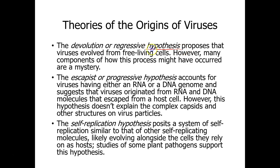There are three hypotheses on the origins of viruses. First is the devolution, or regressive, hypothesis. What that says is that viruses evolved from free-living cells. It's called devolution because free-living cells evolved from simple types of cells, and a virus would be much simpler — so it would be like evolving backwards. Viruses evolved from free-living cells — that's the devolution hypothesis.